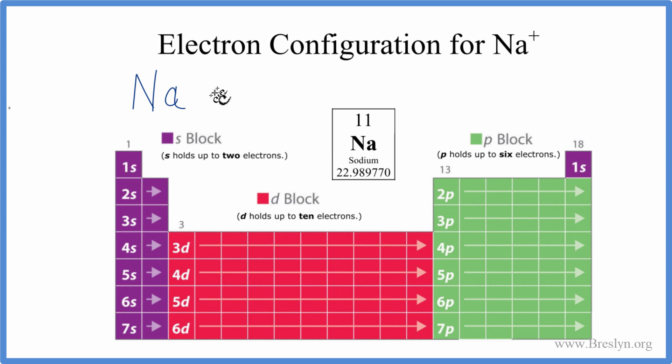1s, that's the first orbital, and s holds up to 2. So 1s². We go across to 2s, 1, 2. So put 2 electrons in there. We've used 4.